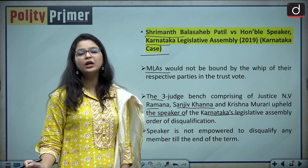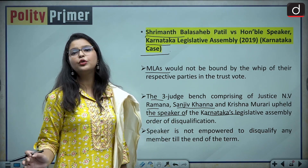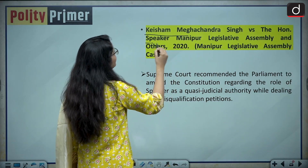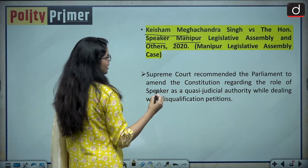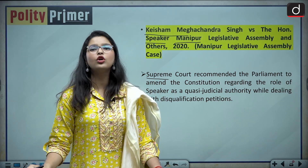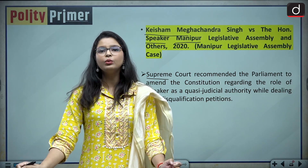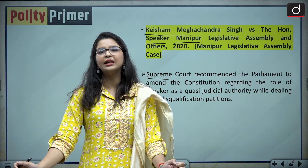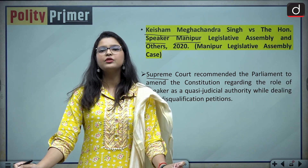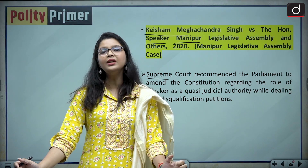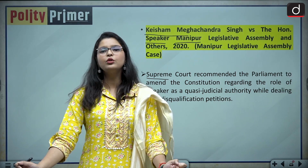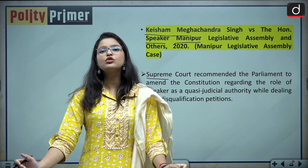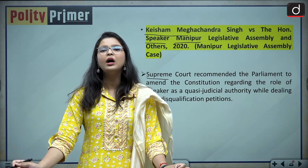In the recent ruling — the Manipur Assembly case — in Kesham Megha Chandra Singh versus the Honorable Speaker, Manipur Legislative Assembly, the Supreme Court recommended that Parliament amend the Constitution and bring in a separate body to decide disqualification issues, as the Speaker should function as a quasi-judicial authority. The Supreme Court also directed Parliament to amend the Constitution to make this change — addressing the issue of the Speaker's political bias that we had discussed earlier.